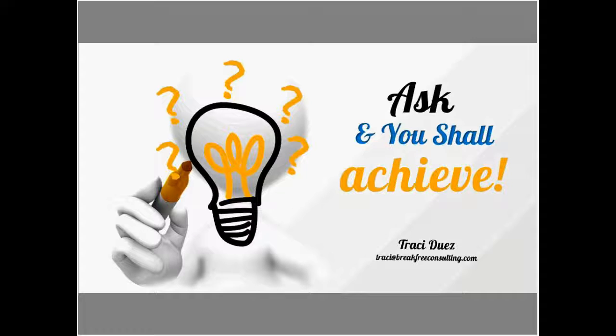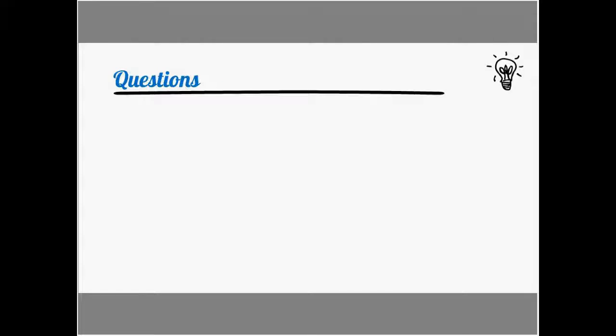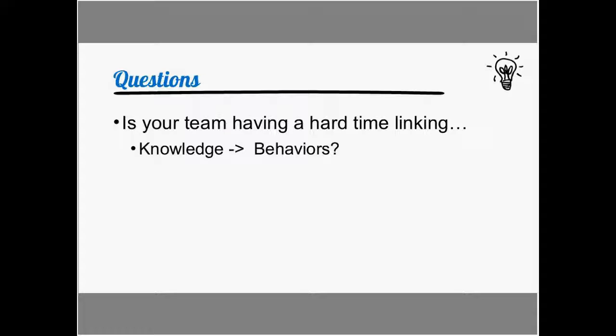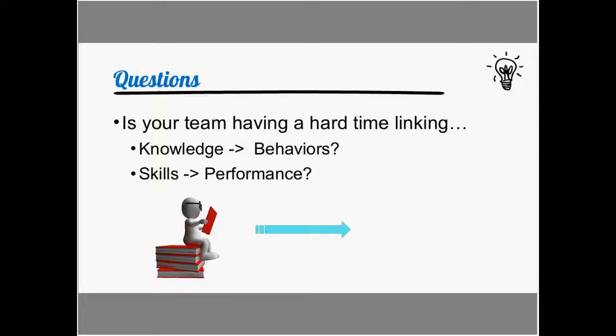A lot of them have challenges, and a lot of them want the same things. They want your team to listen to you. So we're going to talk about questions. I wanted to ask you first, is your team having a hard time linking knowledge to actual behaviors? Like they're really smart at something, but then for some reason they just don't do it. Or maybe skills to their performance. Because skills don't necessarily lead to performance, and knowledge doesn't necessarily lead to behavior. So what's going on there?